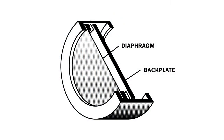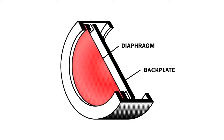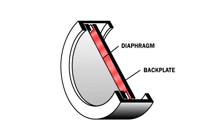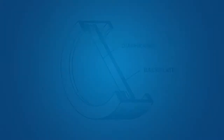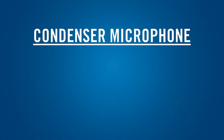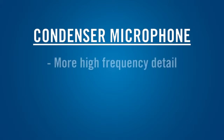In a condenser microphone, sound waves also strike a diaphragm and cause it to vibrate. The diaphragm is mounted just in front of an electrically charged plate. As the diaphragm moves back and forth, it changes the electric field between the diaphragm and plate, which generates an electrical signal that corresponds to the sound. Since there is no voice coil in a condenser mic, the sound waves only have to move the diaphragm, giving condenser mics better high-frequency detail. This makes them ideal for micing stringed instruments, percussion, piano, or subtle vocals.